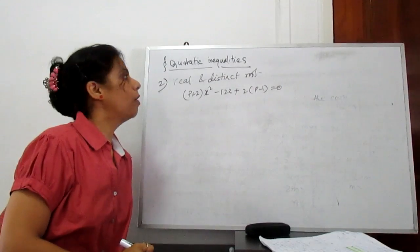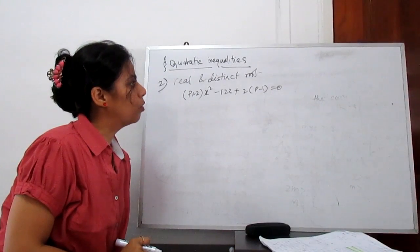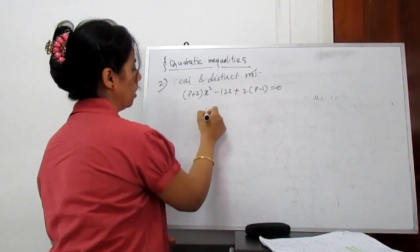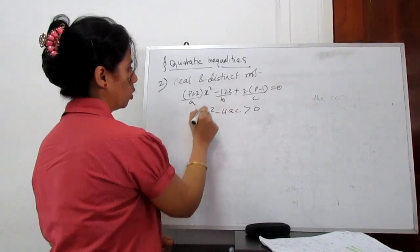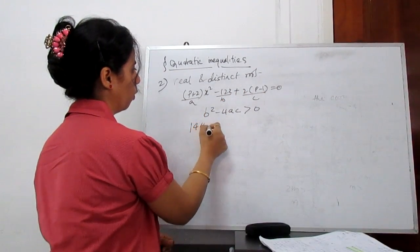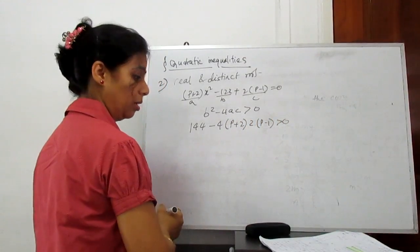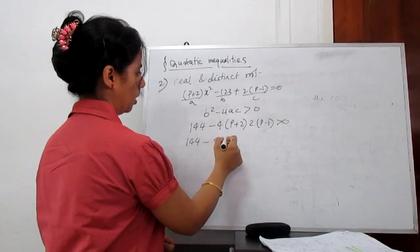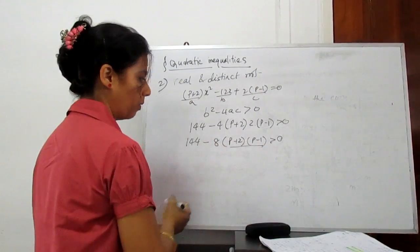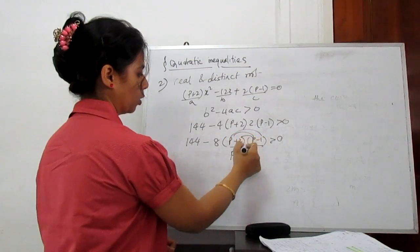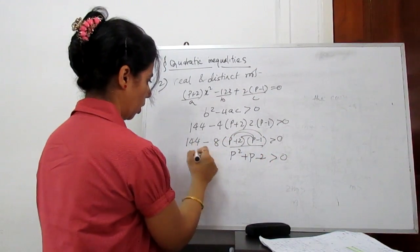Similarly, another example: find the range of p that gives real and distinct roots for the given equation. For real and distinct roots, b squared minus 4ac is greater than 0. Identifying a, b, and c from the equation: b squared becomes minus 12 squared which is 144, minus 4 times a which is p plus 2, times c which is 2 times p minus 1, all greater than 0.